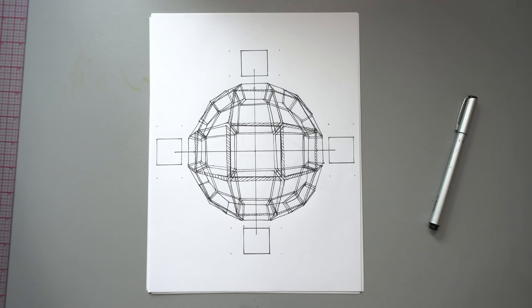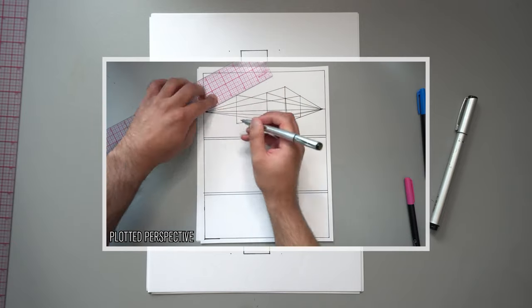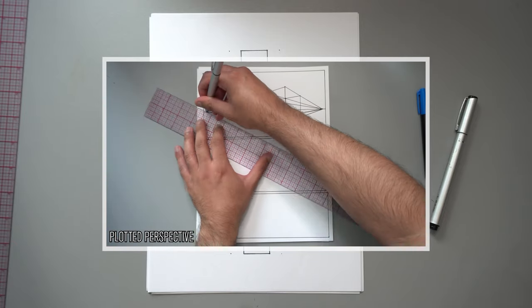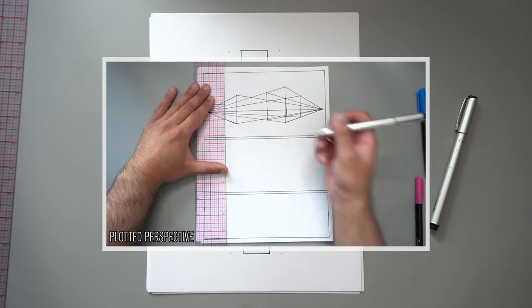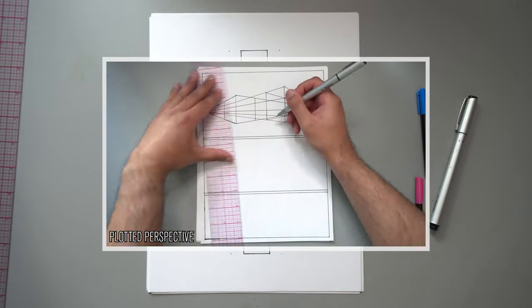For our purposes in this course, I want you to set all that aside. In the plotted perspective exercise, we were permitted to work with vanishing points marked on the page and plot our lines back to them directly, leaving no room for estimation.